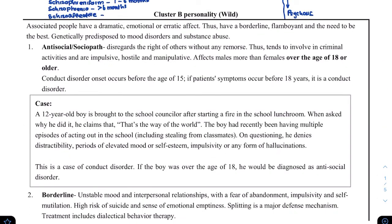Next we have Cluster B personality — the wild, dramatic, emotional type. They have a flamboyant nature, a need to be the best, and are easily predisposed to mood disorders and substance abuse. First, antisocial personality disorder derives from conduct disorder. As a child, those who have conduct disorder may go on to develop antisocial personality disorder (ASPD). Until the age of 18 we do not diagnose ASPD; before that it is considered a conduct disorder.